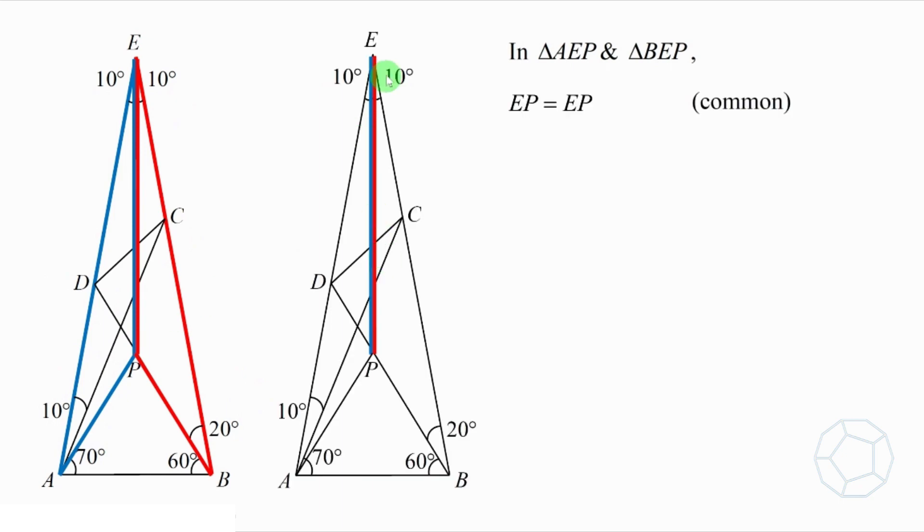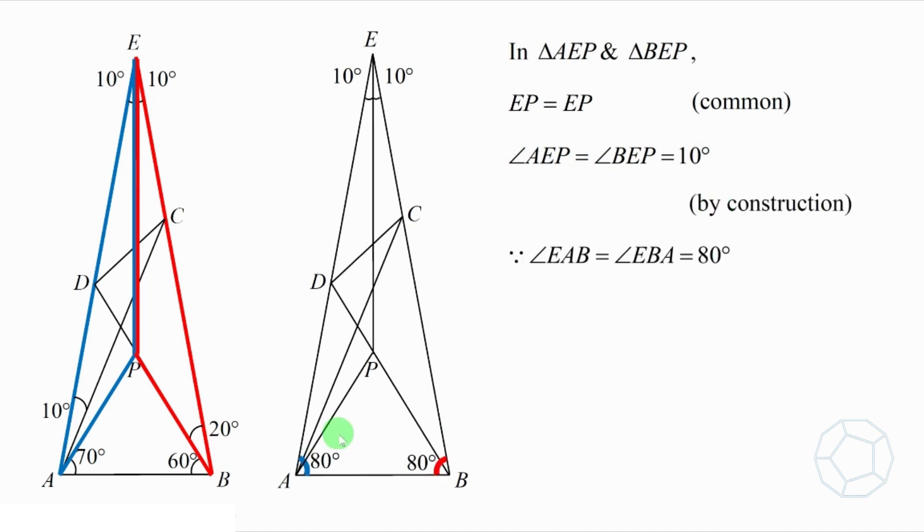To start with, EP is a common side of the two triangles. Next, angle AEP and angle BEP both are 10 degrees. This is by construction of the angle bisector EP. For the third condition, because angle EAB and angle EBA both are 80 degrees, therefore AE and BE are equal in length, and the reason is sides opposite equal angles.